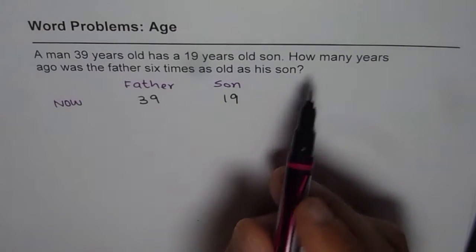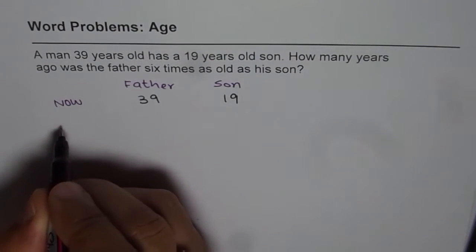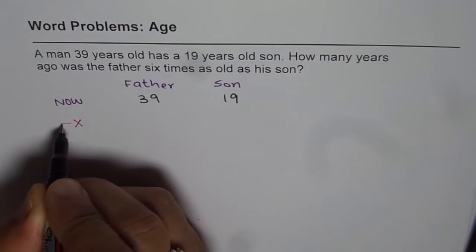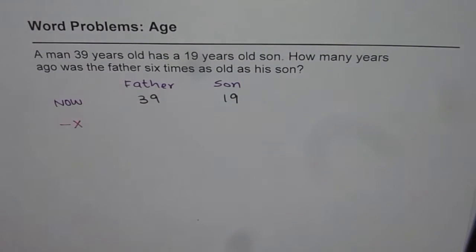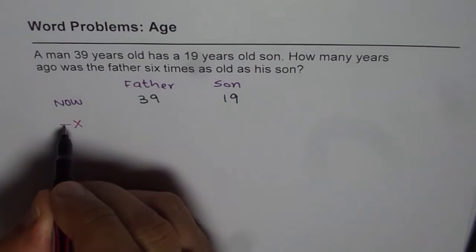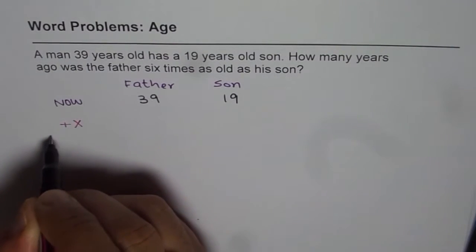So we don't know how many years ago. We say let it be x years ago. So we say minus x. X is our variable. So it is x years ago we can say.